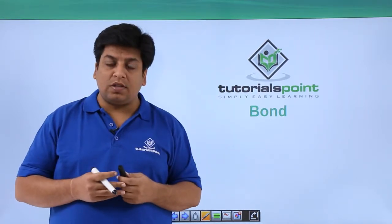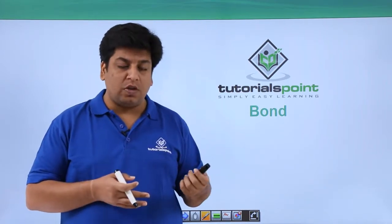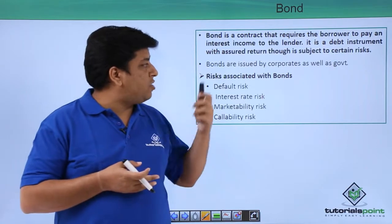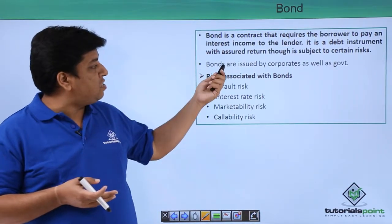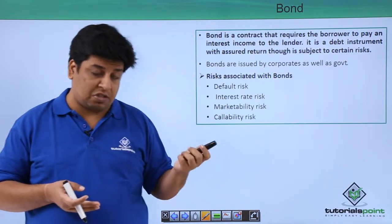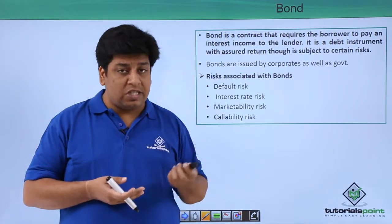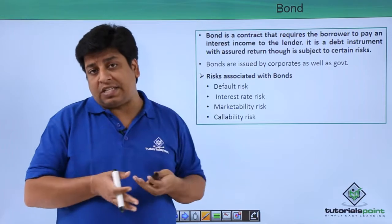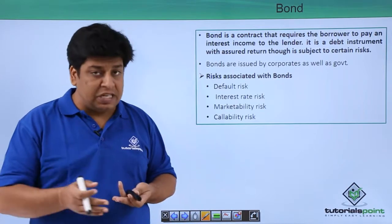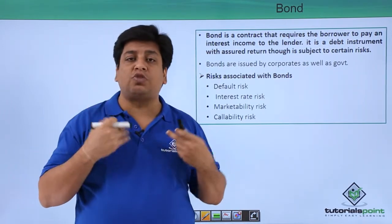Let's understand what is a bond. We just saw what we mean by debt instrument, and one of the examples of a debt instrument was bond. A bond is a contract that requires the borrower to pay interest income to the lender. It is a debt instrument with a return that is subject to certain risk. A fixed amount of interest will be given to the lender for a certain period, and once the bond matures, the borrower returns the money back to the lender.